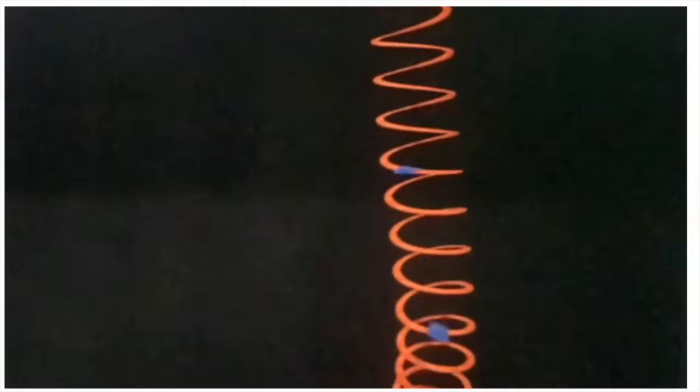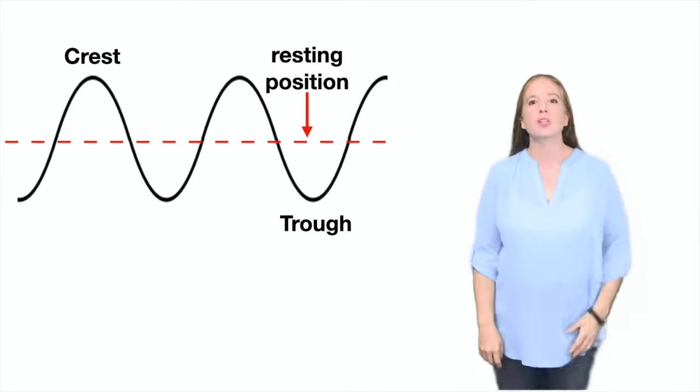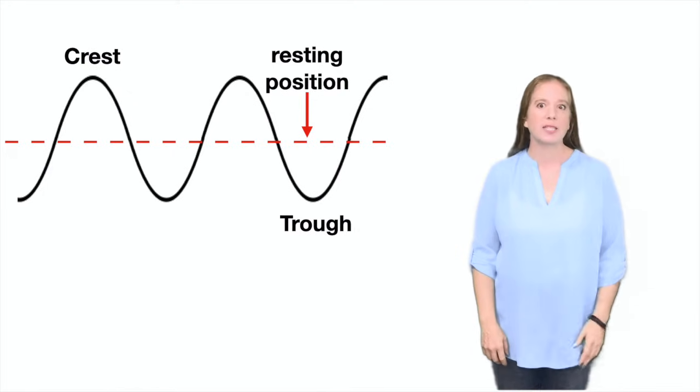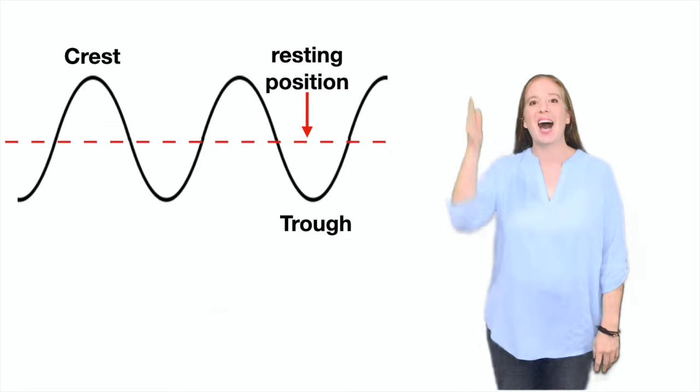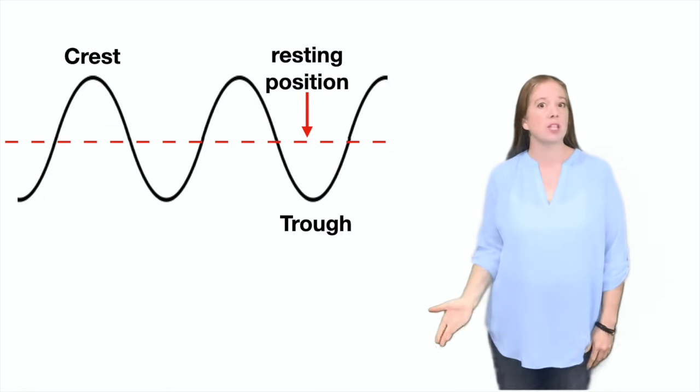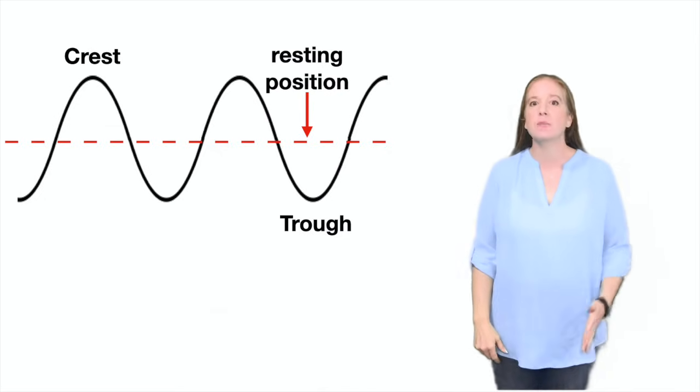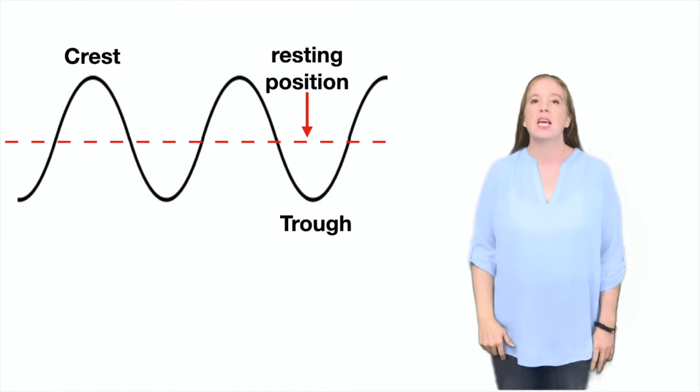The blue pieces are moving side to side and they are perpendicular to each other. The parts of a transverse wave include resting position, crest, and trough. Crest is the highest part of the wave. Trough is the lowest part of the wave. And the resting position is where the wave would be if there was no disturbance moving through it.